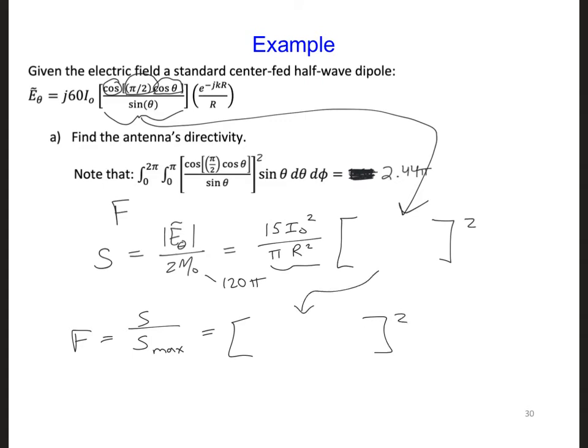So we can put that here. And then finally, to calculate the directivity, we have 4 pi over omega P, and we know omega P, beam pattern solid angle, is F integrated over the surface of a sphere.